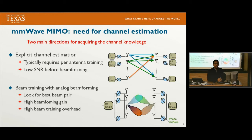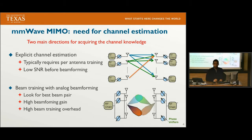Another direction being taken is beam training with analog beamforming. In this case, the transmitter and the receiver form different beams and train their systems with many beams. After that, they look for the best beam pair — the best beam pair that maximizes the SNR is selected. Of course, this technique has a problem of high training overhead, especially if you have narrow beams, because this has to be repeated many times.